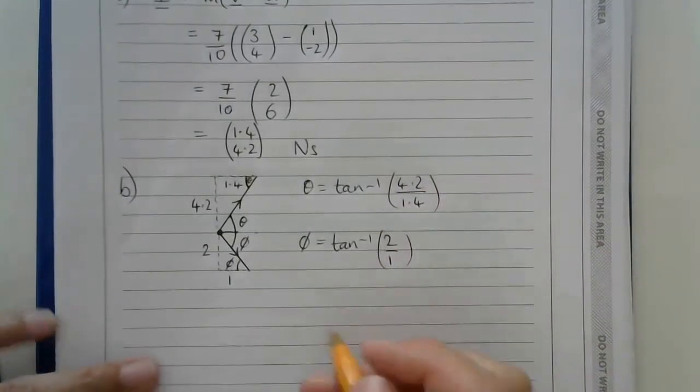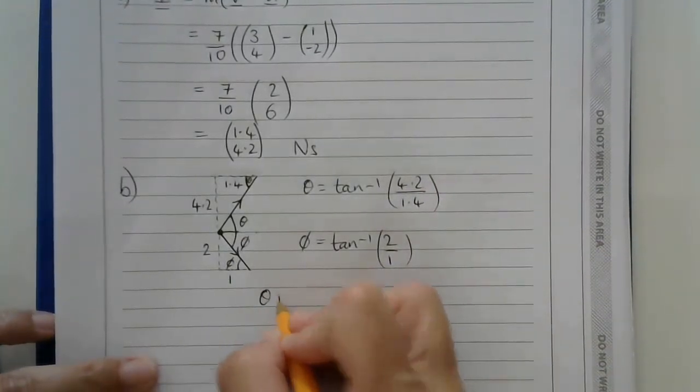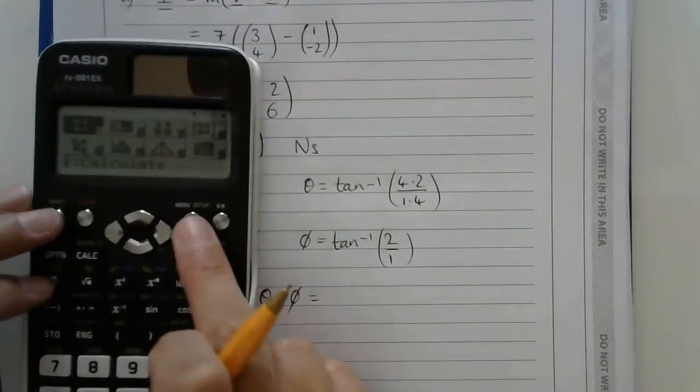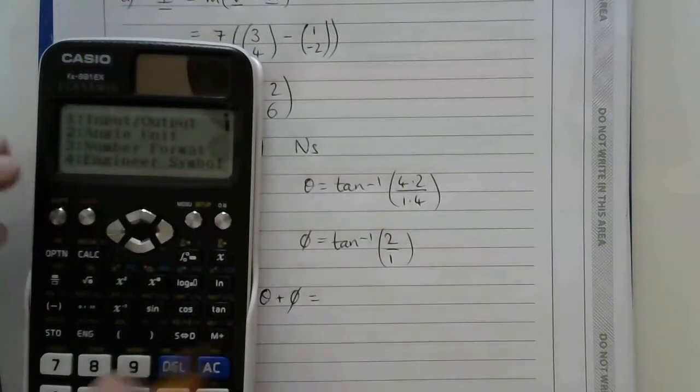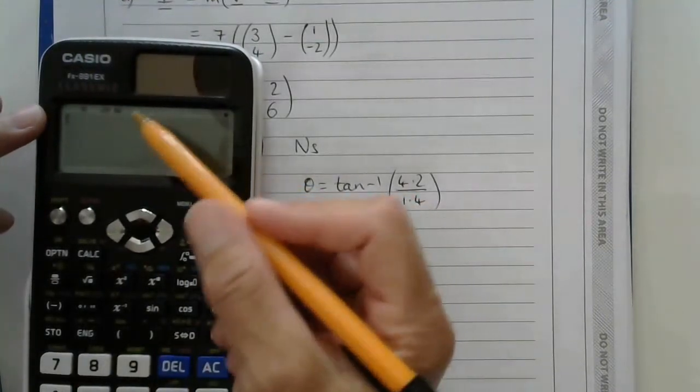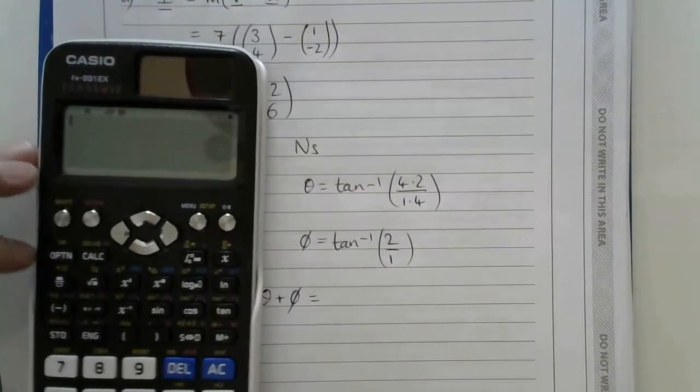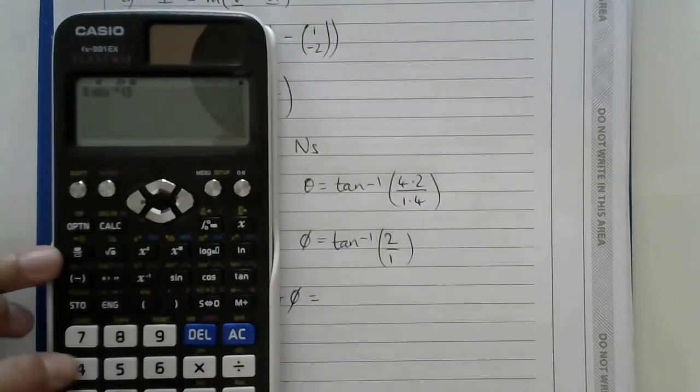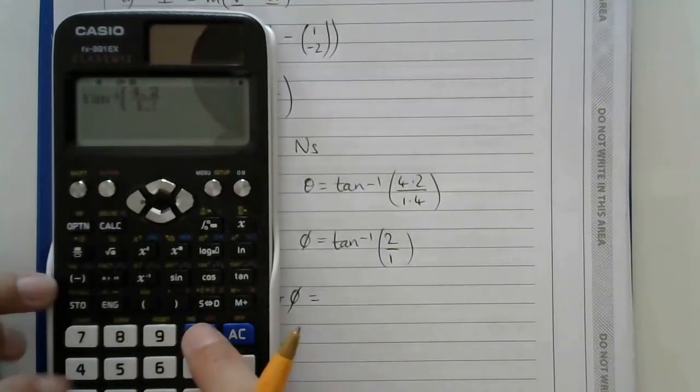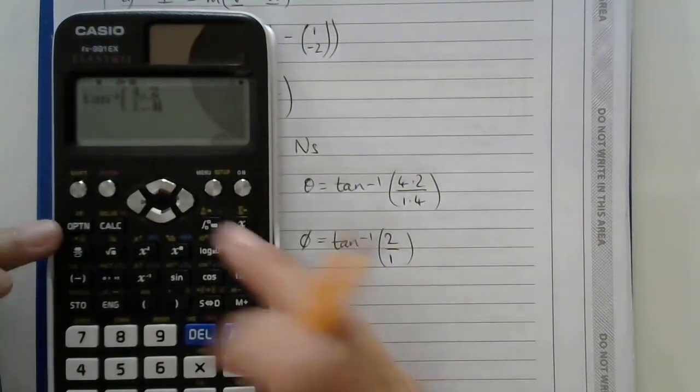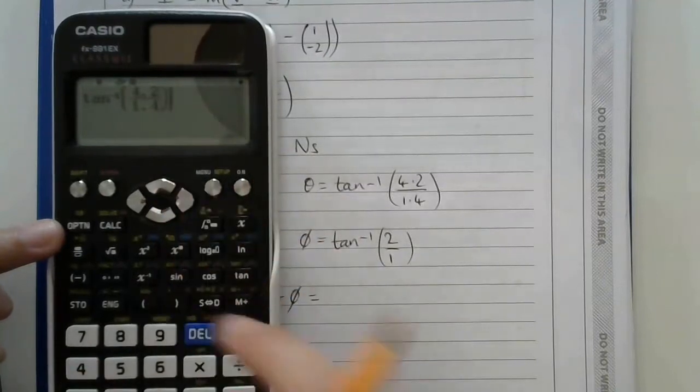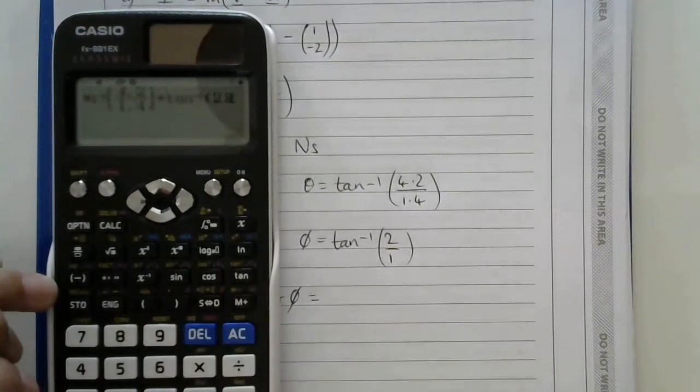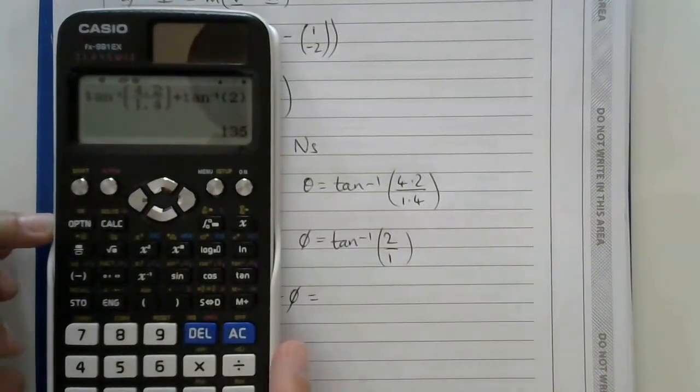And so the angle that is required is those angles added up. So I'll just make sure my calculator is in degrees, so I need degrees here and make sure that I have a d here. And then I'll just do these together. So I'm doing inverse tan of 4.2 over 1.4 and as well as that I need inverse tan of 2 over 1, which is 2.